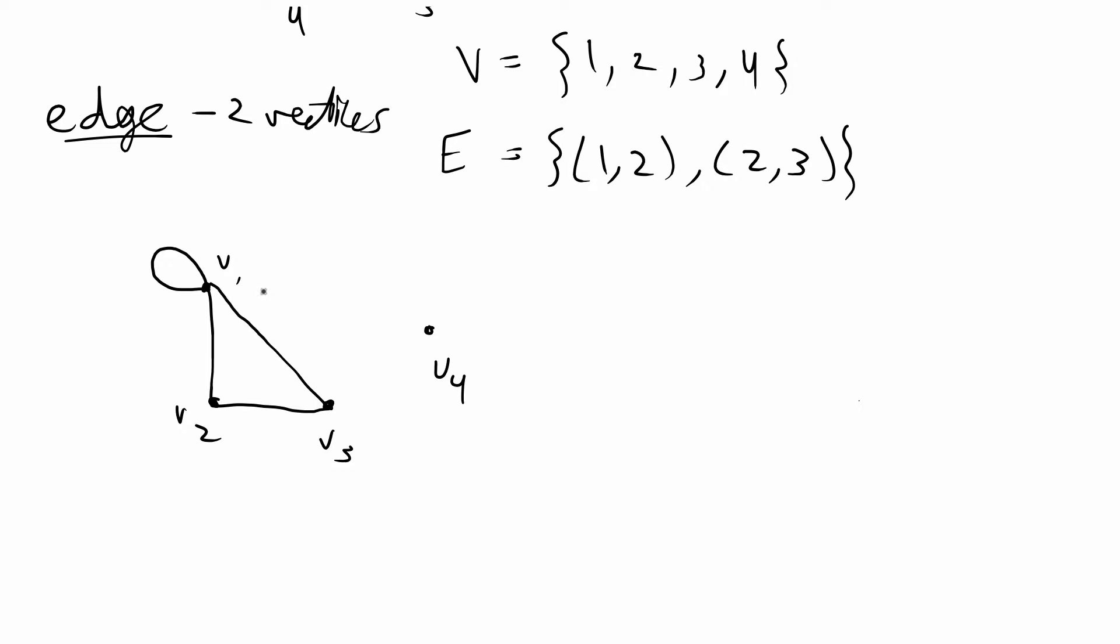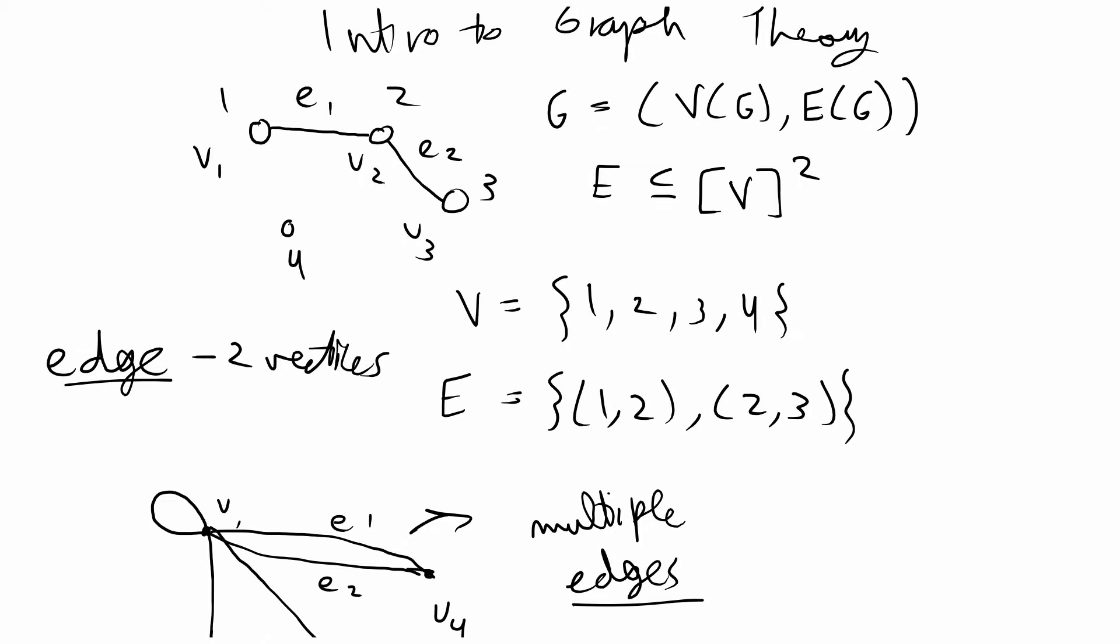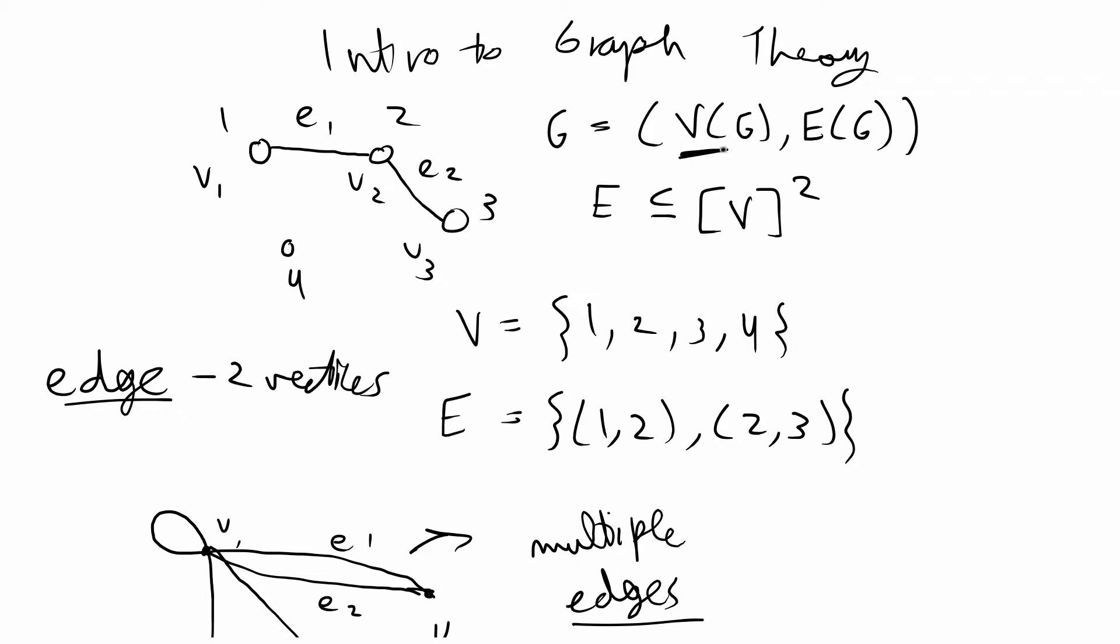It's also okay for two vertices to have more than one edge connecting them. So from V1 to V4 we can have edge 1 but we can also have another edge called edge 2. In cases where you have more than one edge for any pair of vertices this is called having multiple edges. Because you can have multiple edges between any two vertices, we call V a set of vertices and we usually call E a family of edges because any two vertices can have more than one edge connecting them.